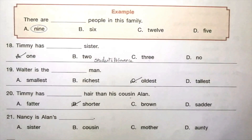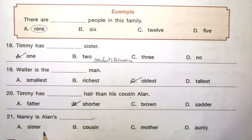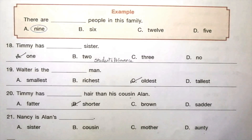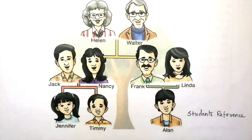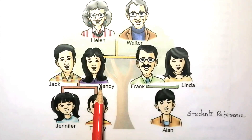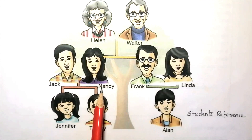Question 21: Nancy is Alan's dash — sister, cousin, mother, auntie. The answer is D, auntie. Look at the picture — Nancy is Alan's auntie.